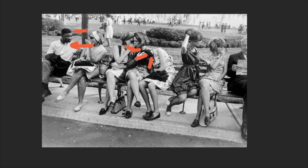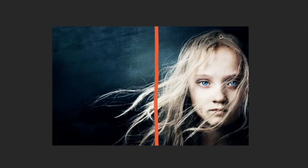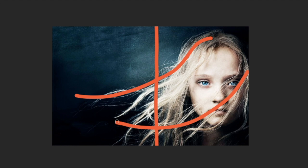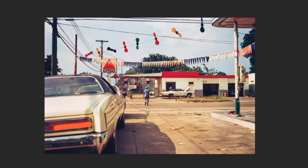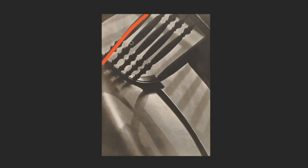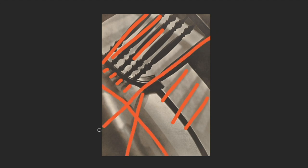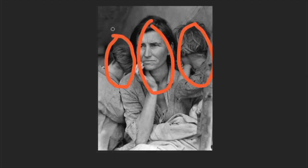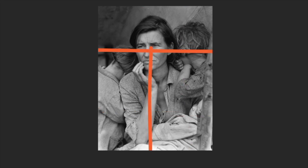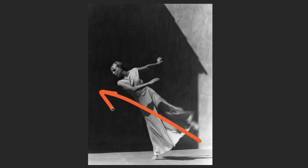As modern humans we've internalized composition conventions without really thinking about them, though as photographers we need to know how to create balance within a scene. Once we've achieved balance we get a feeling that the image has worked. There's no such thing as a correct composition — it's more about building up a toolbox of ideas that you can draw on in any given situation.